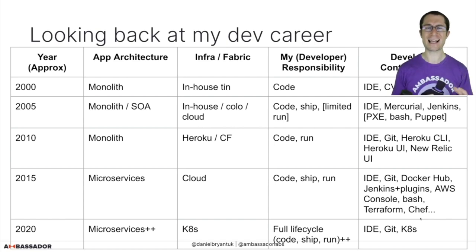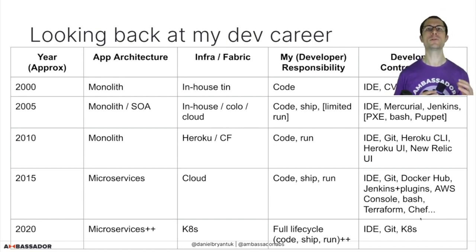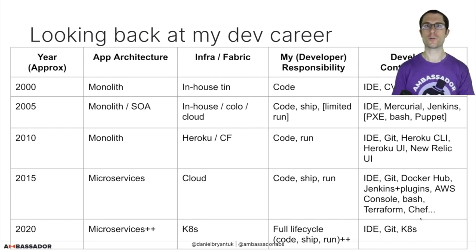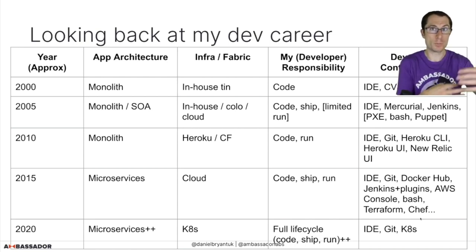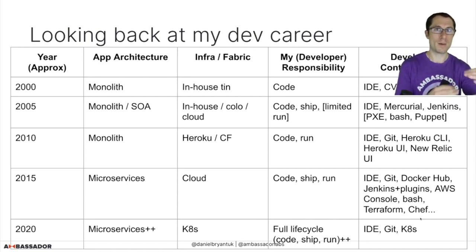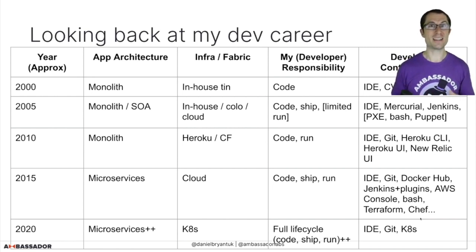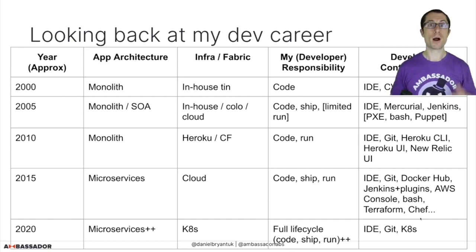My life as a developer was super easy. It was literally 'CF create route' or 'git push to Heroku.' That was all I had to think about. Maybe I looked at a New Relic dashboard for some observability, or checked logs when something went wrong. As a developer, I didn't think too much about the CI/CD aspect of what I was doing.